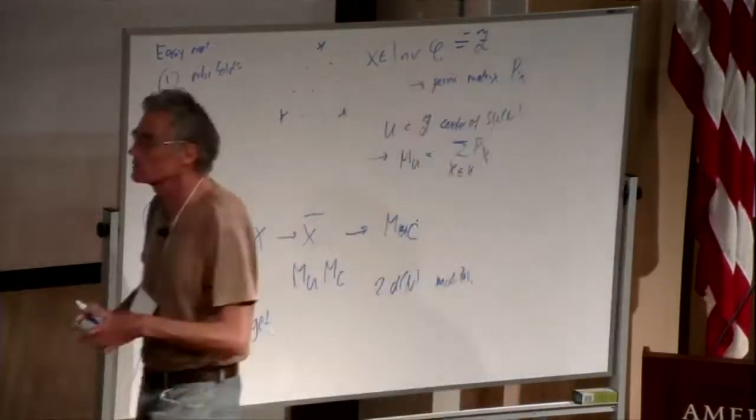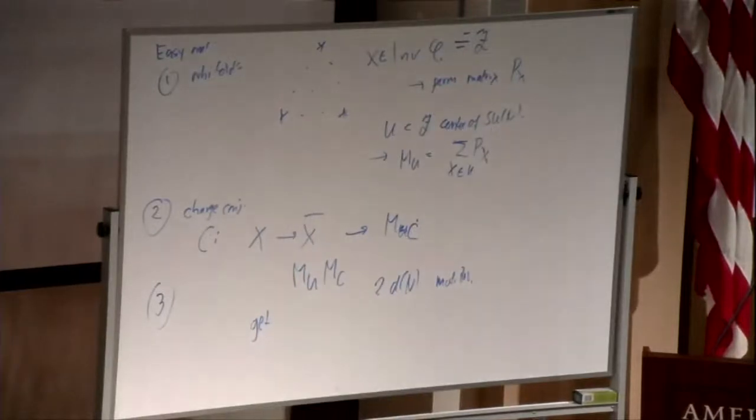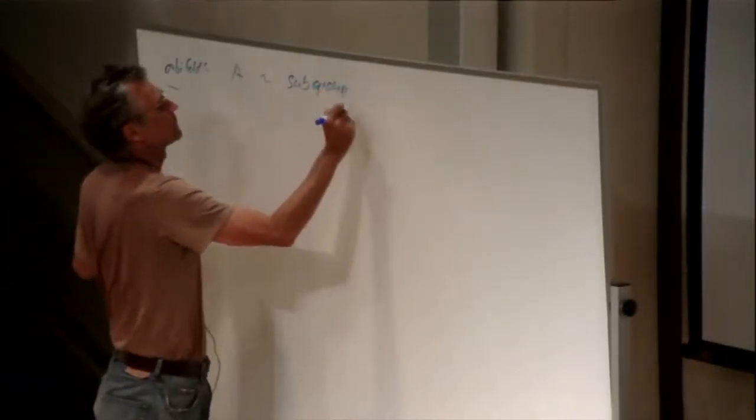Now the point is, we want to describe them because so far this doesn't really say that much about the module categories. An explicit construction in the first case has been known for a long time. For the orbifolds, the algebra is essentially given by the subgroup.